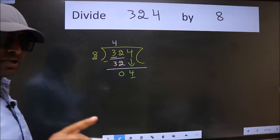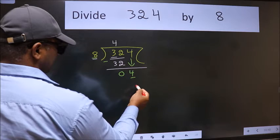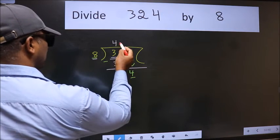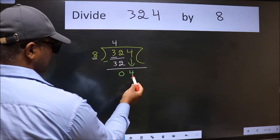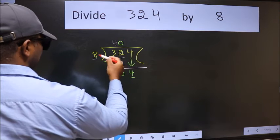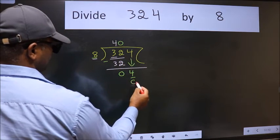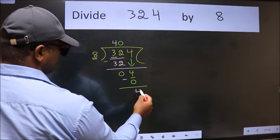Instead of that, what we should think of doing is, which number should we take here. If I take 1, we will get 8. But 8 is larger than 4. So what we do is, we take 0. So 8 into 0, 0. Now we subtract, we get 4.